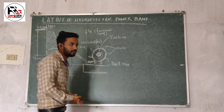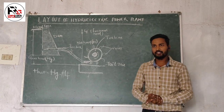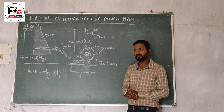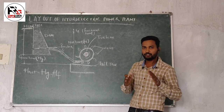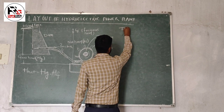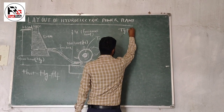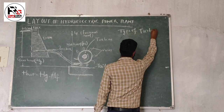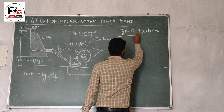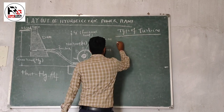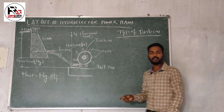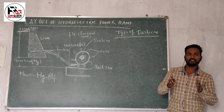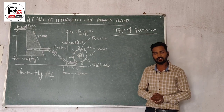Now I will explain the main types of turbines. Generally, it depends on the energy available at the inlet of the turbine. Turbines are of two types: the first one is the impulse turbine and the second one is the reaction turbine. If the water approaches with kinetic energy at the inlet of the turbine, that is known as the impulse turbine.